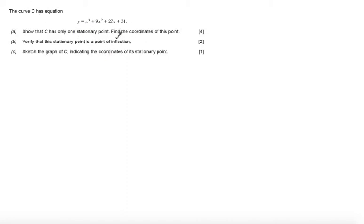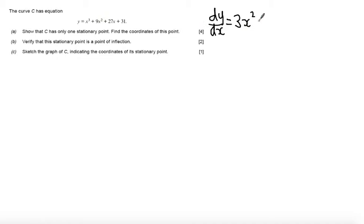To find a stationary point we know that we have to find dy by dx. Differentiating x cubed I get 3x squared, differentiating 9x squared I get plus 18x, differentiating 27x I get plus 27, and differentiating the constant it disappears.